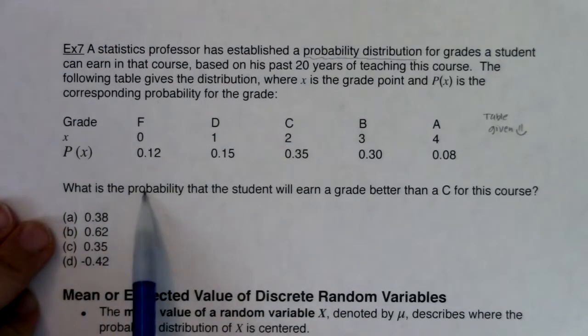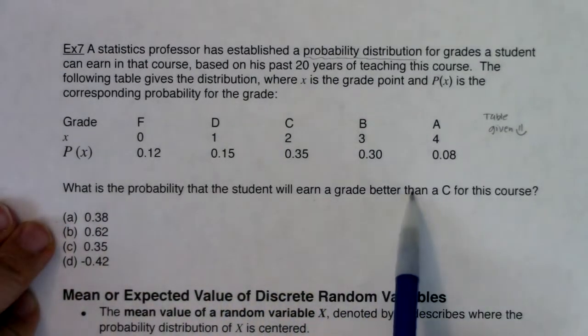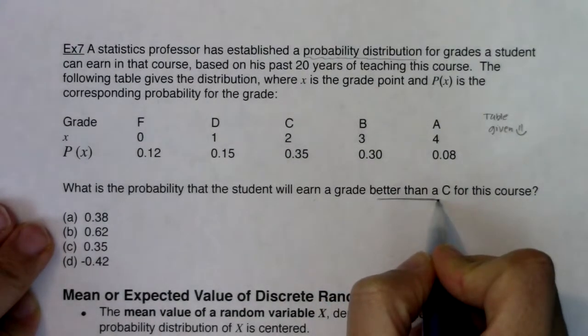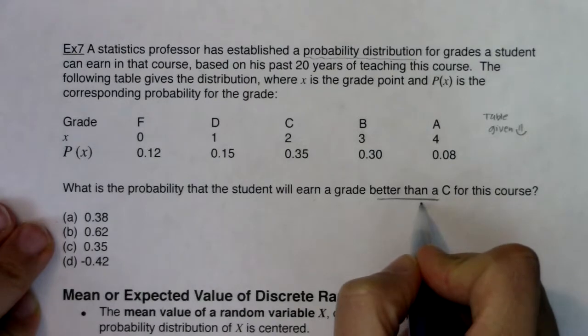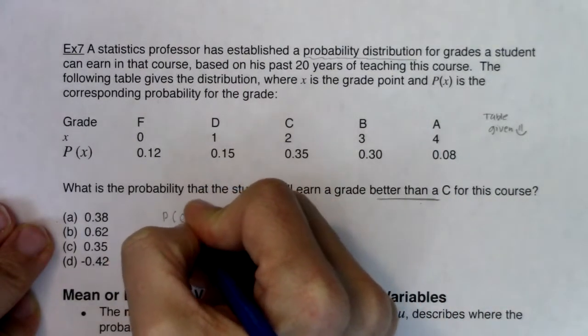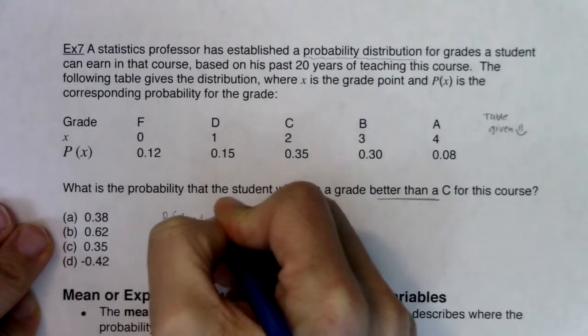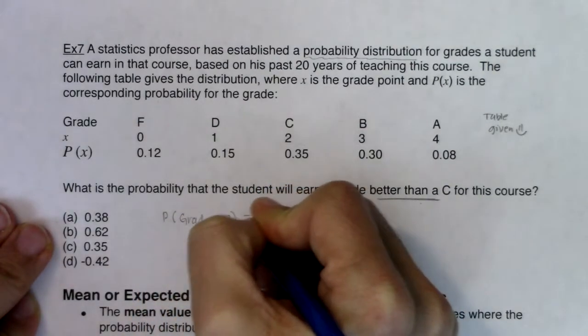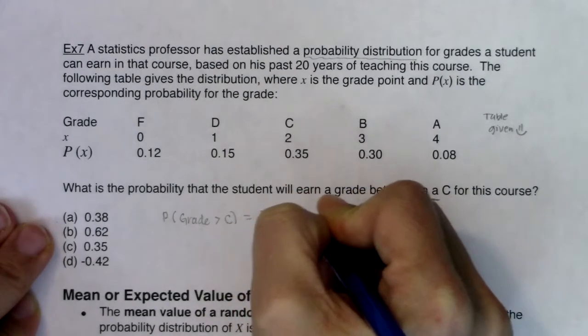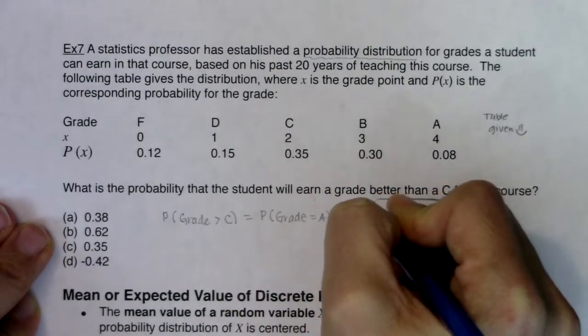What is the probability that a student will earn a grade better than a C? The phrase, better than a C, is what's key in this problem. If I want to get my grade to be better than a C, that really means I earn an A or I earn a B.